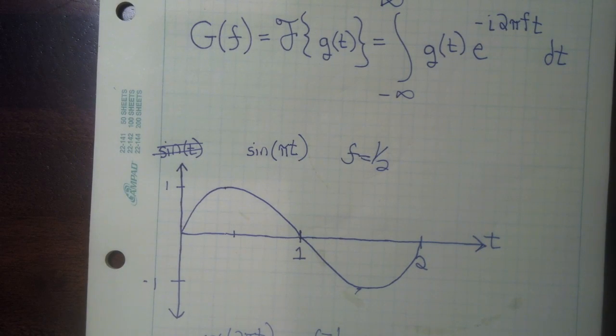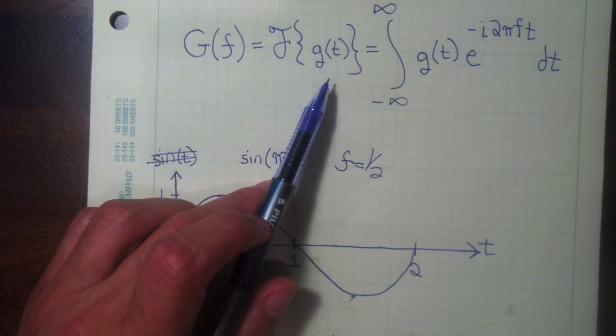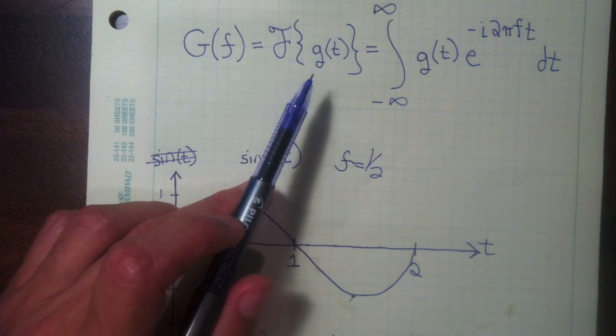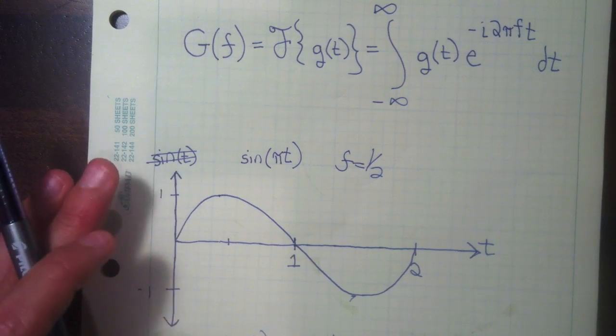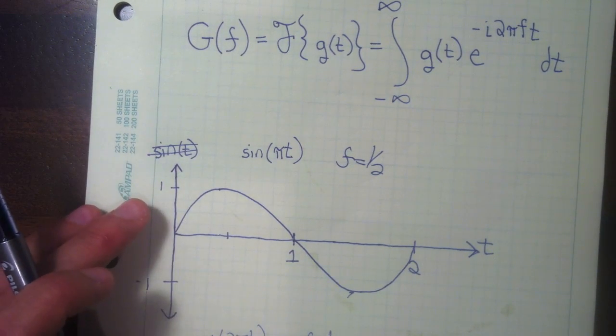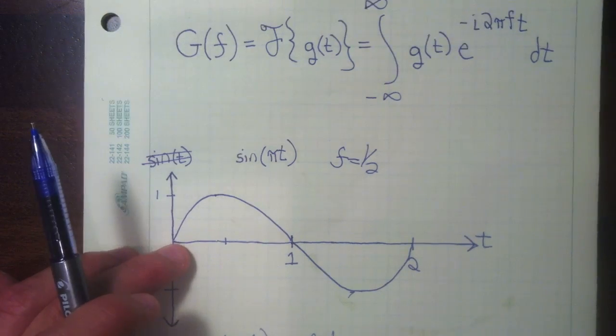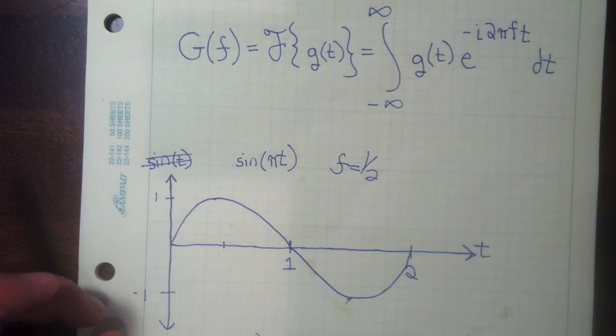So the Fourier transform basically gives us a method of decomposing any function g of t into the sum of sine and cosine functions. So the sine and cosine functions then are the building blocks for all waveforms. And so to give you an idea, to give you some intuition on that, let's take a look at an example.